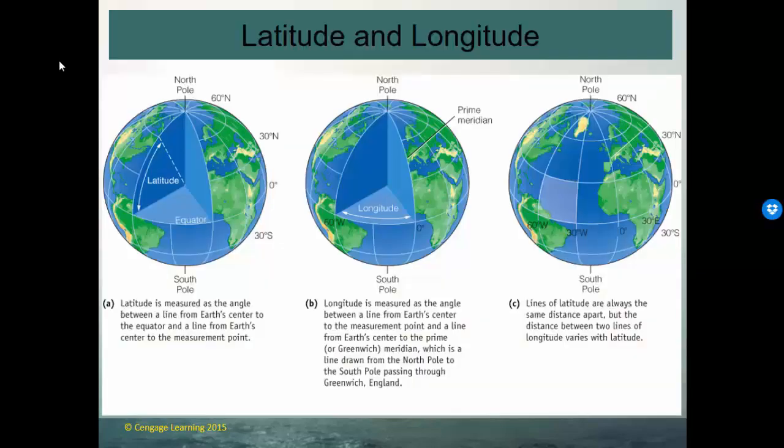Lines of latitude and longitude are imaginary lines drawn on the globe to pinpoint a location. Lines of latitude are parallel to the equator and run east to west but are stacked from north to south. The zero line of latitude is the equator. 30 degrees north latitude is a 30-degree angle running from the equator to the center of the Earth near Jacksonville, Florida. 60 degrees is further north, and the North Pole is at 90 degrees. These lines are parallel to one another, running east-to-west but stacked north-to-south.